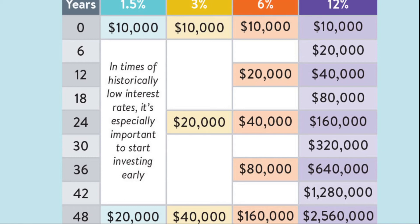Also note that a compound annual return of 8% is plugged in as 8, not as 0.08. If you were to divide 72 by 0.08 you'd get 900 — you'd add two zeros — so always use the whole number, not the decimal form.